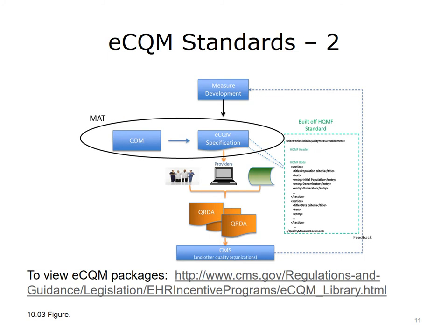This slide shows how the different eCQM standards work together. The Measure Authoring Tool, MAT, is used by measure developers to generate HQMF specifications. The MAT uses the Quality Data Model and follows all required conventions. HQMF is then parsed by an eCQM engine and matched up with patient data to generate eCQM results in files according to the Quality Reporting Document Architecture.